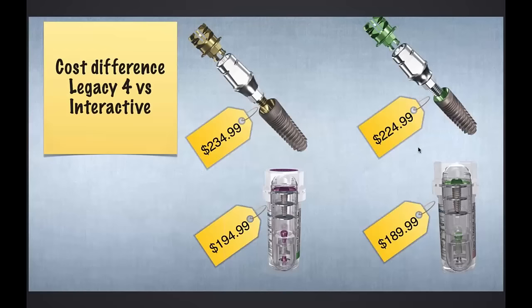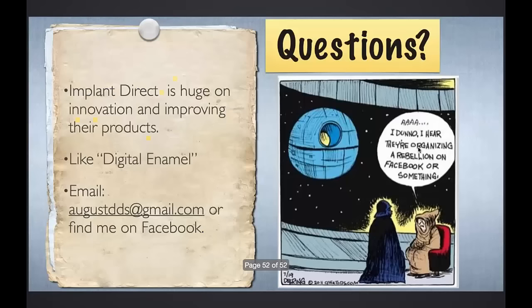On economics: the cost between an internal hex implant and a conical connection from Implant Direct is really not that different — about 10 dollars. I'd rather spend 10 bucks to have less micro movement. I'm done with my presentation. If you ever want to get a hold of me, the easiest way is Facebook, digitalenamel.com, or email at augustdds@gmail.com — though I respond much quicker to instant messaging. Let's go ahead and pull up the panel and take a look at some questions.